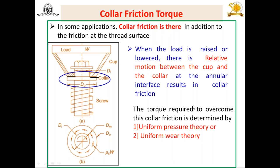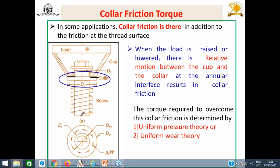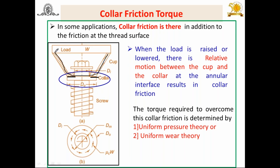In some applications such as screw jacks, you will find a cup part over which the load rests, and it rotates freely on the screw. This screw has a collar which is an integrated part of the screw. During raising the load, as the screw rotates, there is friction between the cup part and the collar part. The collar has an inner diameter Di and outer diameter Do, and this annular ring area is subjected to collar friction.